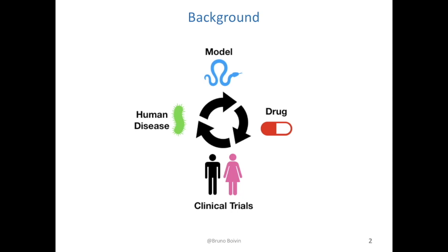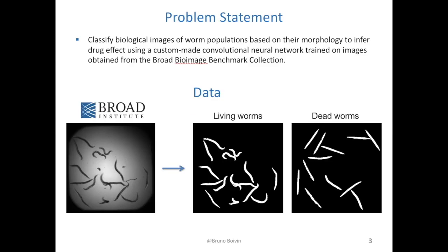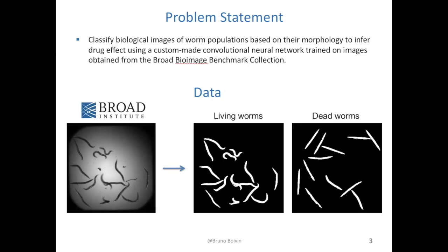This is done so that the disease can be studied more easily and for candidate drugs to be tested. Promising drugs are then moved into clinical trials so they can be tested on human patients. For this project we'll focus on automatically measuring drug effects from images of our model. The goal is to classify images of C. elegans worms based on their morphology, which is correlated to their health state.